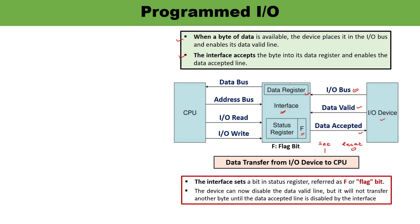The data stored in the data register is carried by the data bus from the data register to the CPU. The address bus carries the address only — the CPU generates the address from which particular location data is to be read or at which location data is to be written. IORead and IOWrite are the control lines indicating whether a read operation or write operation is being performed.